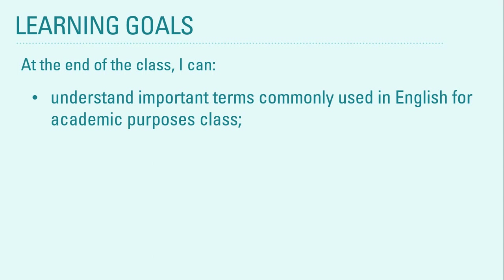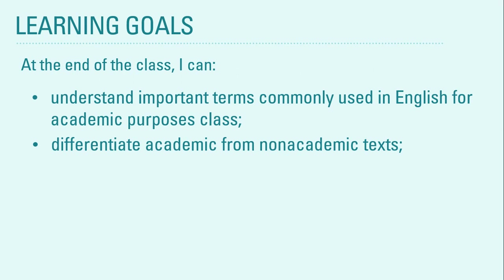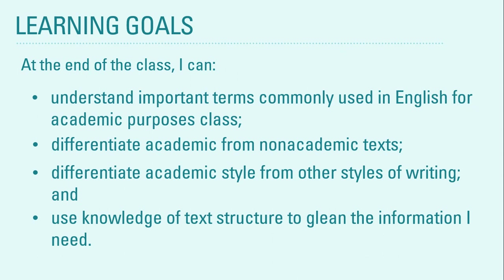Let's start with our learning goals. At the end of the class, you will be able to understand the important terms commonly used in an English for Academic Purposes class, differentiate academic from non-academic texts, differentiate academic style from other styles of writing, and use knowledge of text structure to glean the information you need.